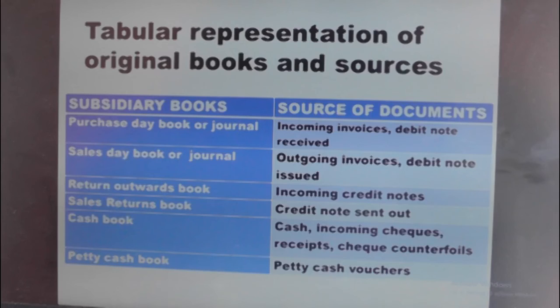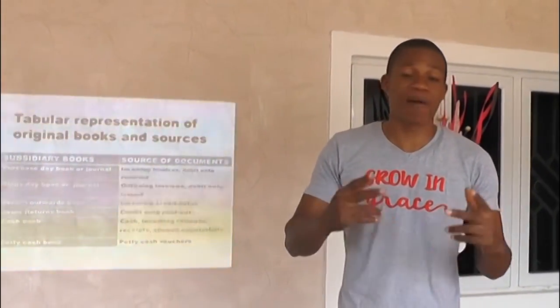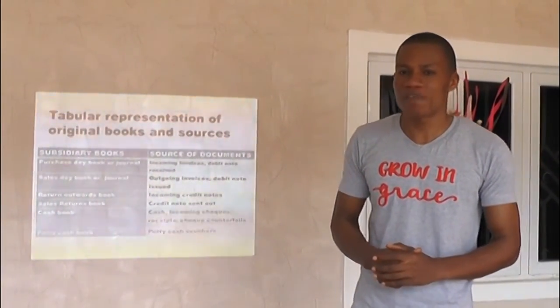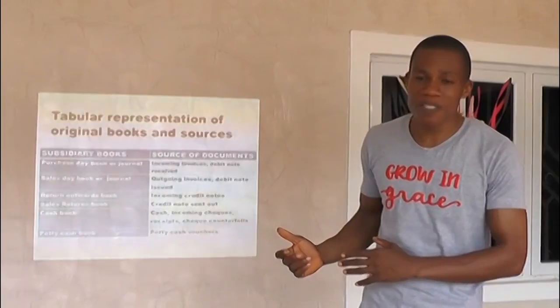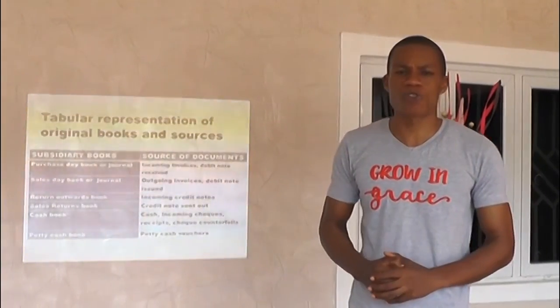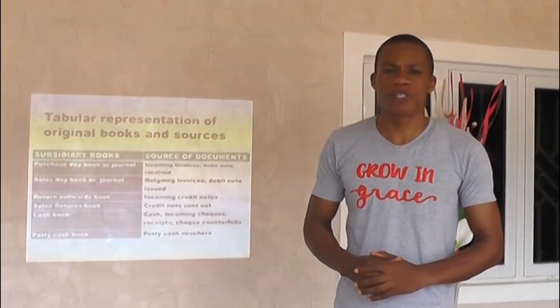We have seen today the tabular representation of all the subsidiary books and their source of documents. We have talked about the invoice, the debit notes, and the credit notes — where we said it can be seen in two perspectives: credit notes received and credit notes issued — and we have seen the tabular representation and the various source of documents for them. Thank you very much and don't forget to subscribe to our YouTube channel.